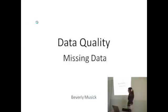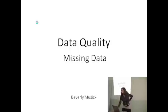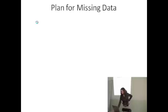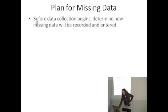Let's talk about missing data. The biggest mistake that people make with missing data is that they don't anticipate that they'll be missing data. Especially in research, that's a big problem. Investigators and research assistants sometimes think they'll be able to answer every question on every form, but that's not the case. We really need to prepare and plan for missing data. There will be missing data regardless of all of our efforts to avoid it.